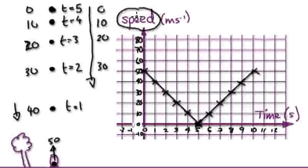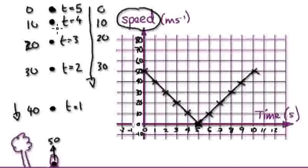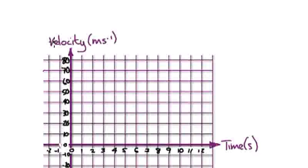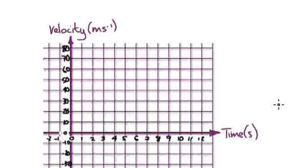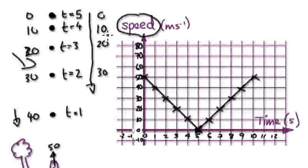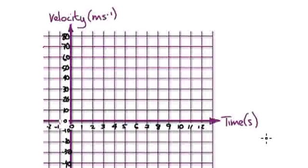Speed is not a very useful graph. A better graph would be to use velocity. As explained in an earlier video, velocity is like speed but you have to take direction into account. Let's take this same scenario but use a velocity-time graph rather than a speed-time graph.